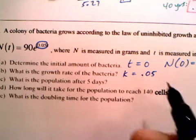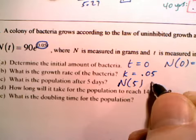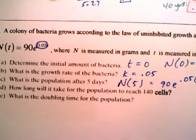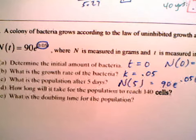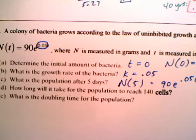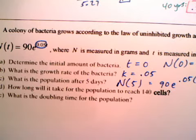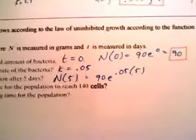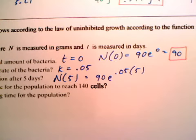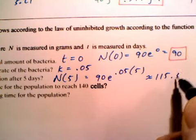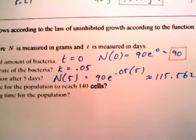What is the population after five days? Well, we let T equal 5. And we get 90 times e to the .05 times 5. We can type that in. 90 times e to the .05 times 5. And we get 115 point bacteria. We don't really have part of a bacteria, but maybe it can. 115.562 bacteria.